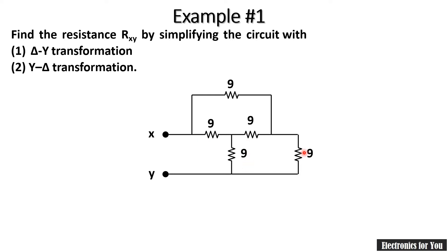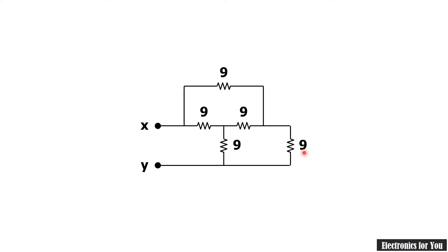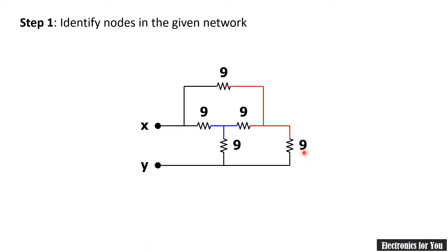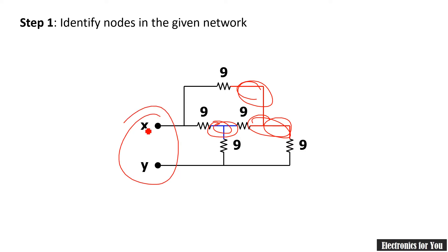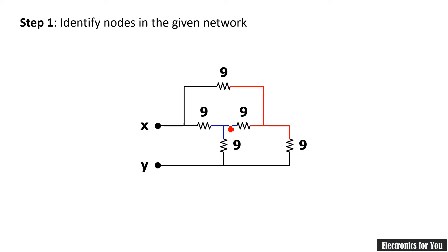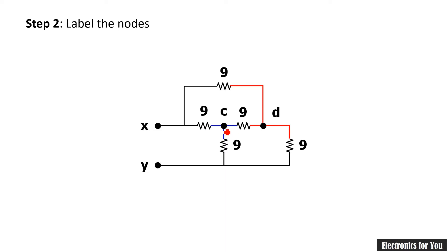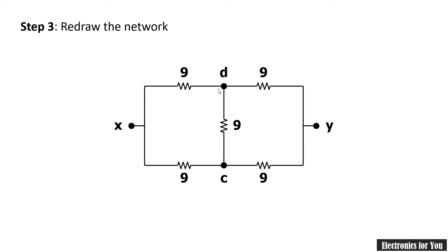All resistances in this problem have the same value. Step one is to identify the nodes in the given network. We identify two nodes already given in the network. I will label them as C and D; X and Y are already labeled. Step three is to redraw the network. In the redrawn circuit, between C and D there is a 9Ω resistance, between X and C a 9Ω resistance, and between X and D also a 9Ω resistance.